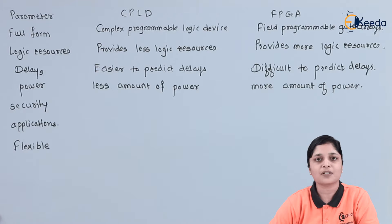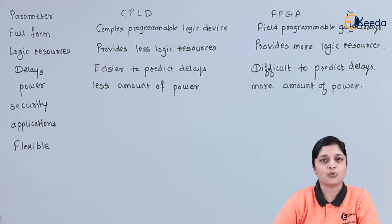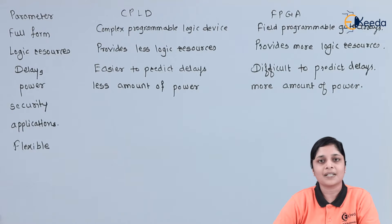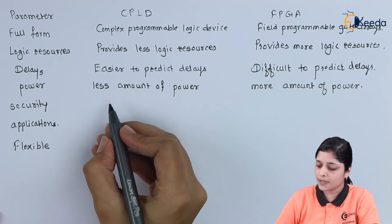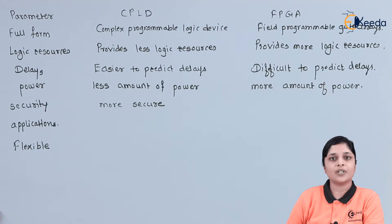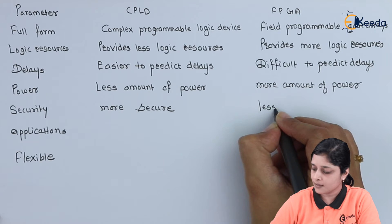The next factor is security. While designing any digital circuit, security is a very important factor. Whatever information is stored in the digital circuits should be secure. If we lose any bit of information, we can't get our output as per the requirement. CPLDs are more secure — the information is not easily lost — and FPGAs are less secure, meaning there are higher chances of losing information.